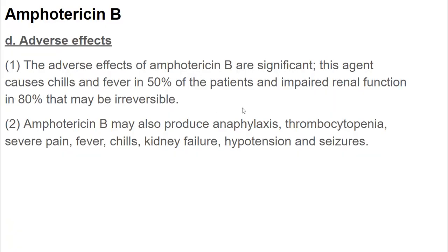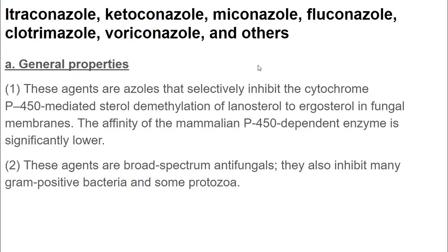The adverse effects of amphotericin B are significant. This agent causes chills and fever in 50% of patients, and impaired renal function in 80% of patients, which may be irreversible. Whenever we have irreversible effects, extreme precautions must be taken - blood and renal function should be monitored when administering amphotericin B. It may also produce anaphylaxis, thrombocytopenia, severe chills, pain, kidney failure, hypertension, seizures, and anemia.